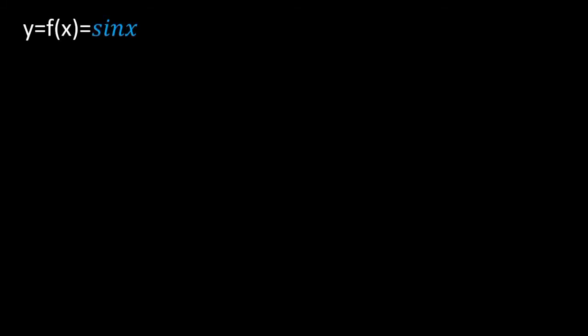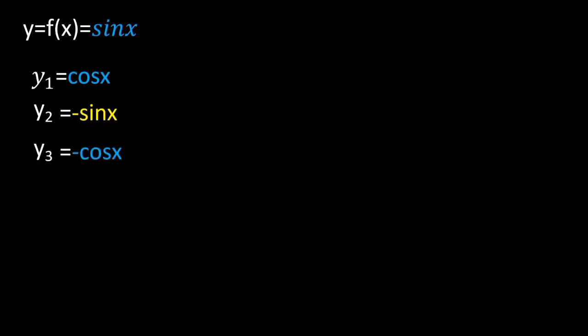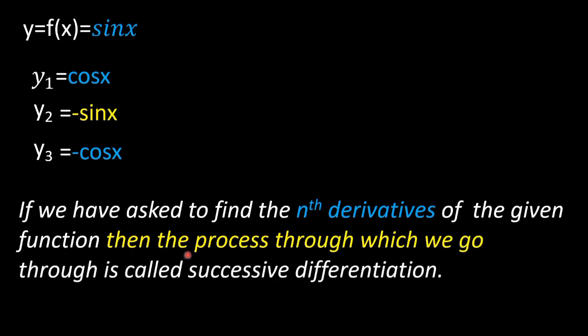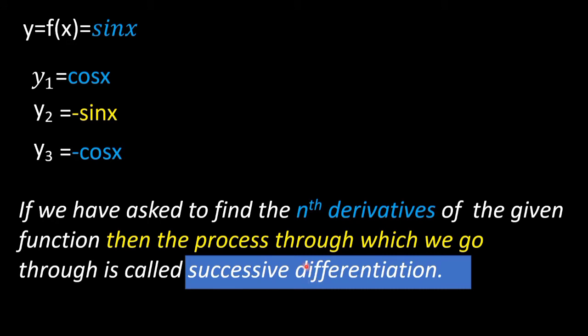Hello everyone, welcome to my YouTube channel BC Mathematics. Look at the function y = f(x) = sin(x). If you differentiate once, we get y1 = cos(x). Again if we differentiate y1 with respect to x, what we get is minus sin(x). If we differentiate y2 with respect to x, then we get y3 = minus cos(x). The process through which we find the nth derivative of a given function is called successive differentiation.